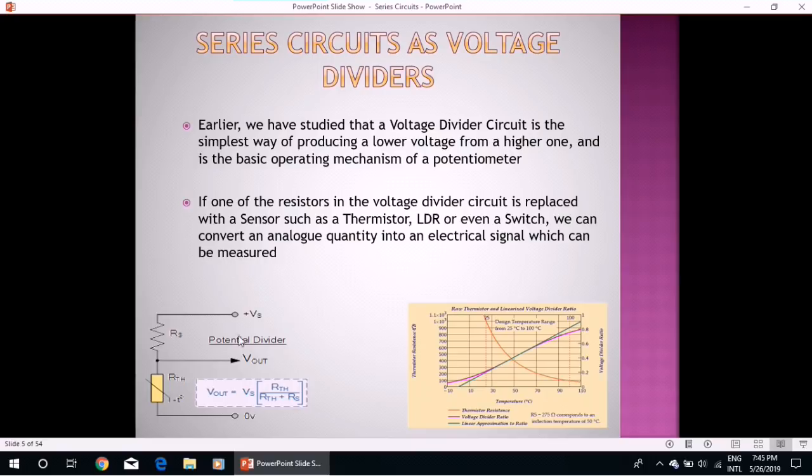Here we have replaced one resistor with thermistor and see the graph between temperature and resistance. This shows negative temperature coefficient where resistance will decrease with increase in temperature, and this pink line is the curve for voltage divided ratio.